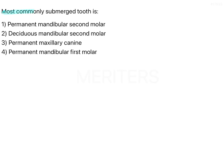The most commonly submerged tooth — the options are permanent mandibular second molar, deciduous mandibular second molar, permanent maxillary canine, and permanent mandibular first molar. The exact terminology for a submerged tooth is an ankylosed deciduous tooth, and this term is used for primary dentition. A submerged tooth is an ankylosed tooth, meaning it is fused to bone and fails to exfoliate.